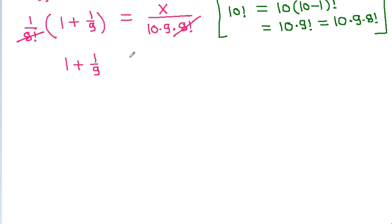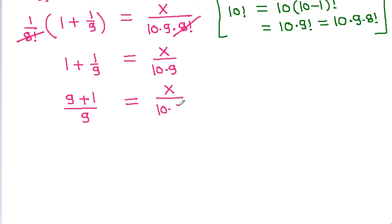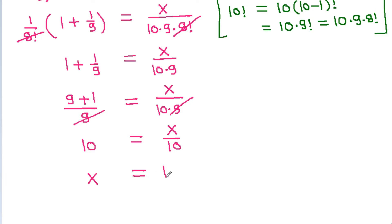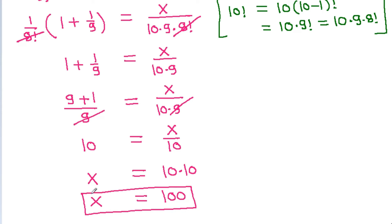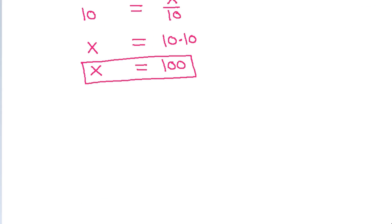So 1 plus 1 by 9 equals x by 10 times 9. That gives 9 plus 1 by 9, equal to x by 10 times 9. The 9s cancel, so 10 equals x by 10, and x is equal to 10 times 10, so x equals 100.